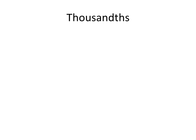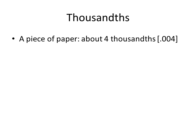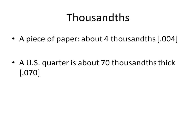So how much is a thousandth of an inch anyway? Some rules of thumb: a piece of paper is about 0.004 or four thousandths. A quarter is about seventy thousandths, 0.070.